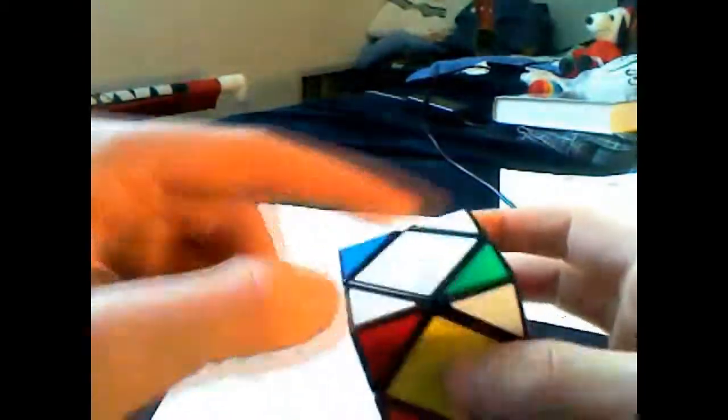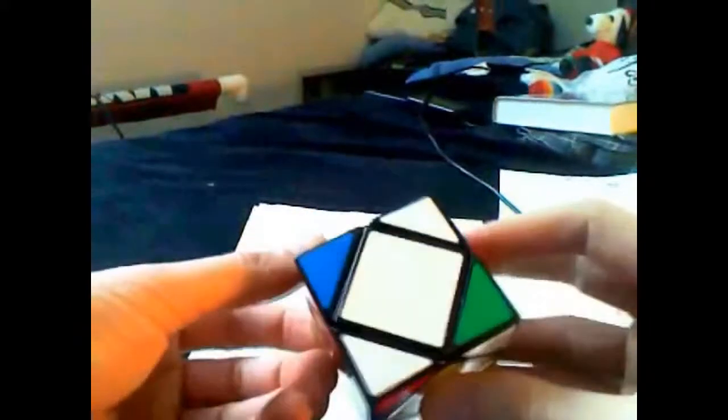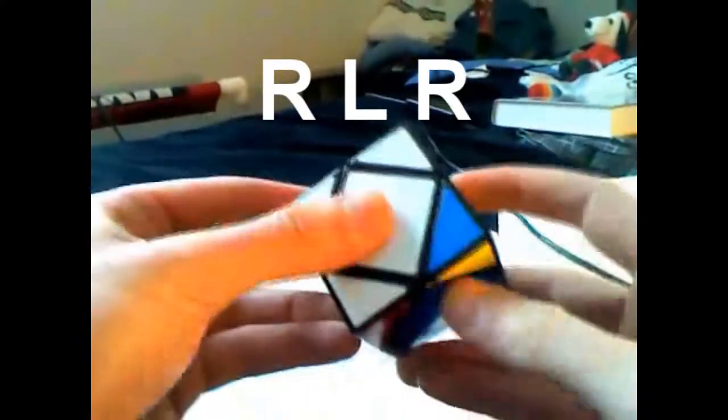The first case is where these two corners have to switch places and they're oriented like so. All you have to do is R, L, R.